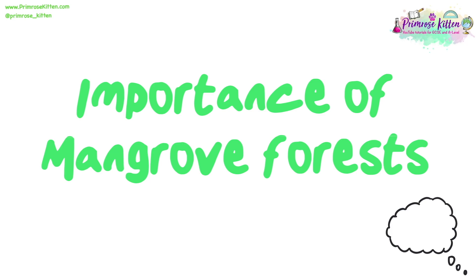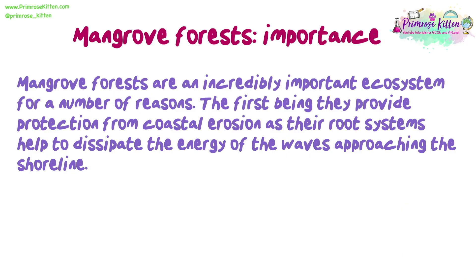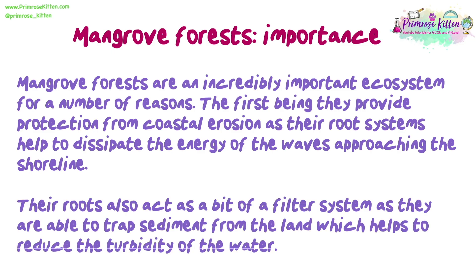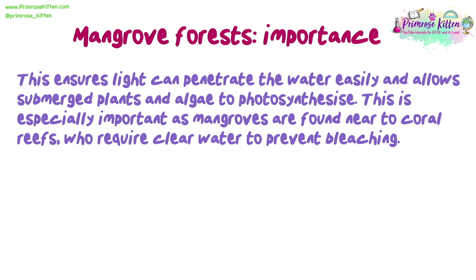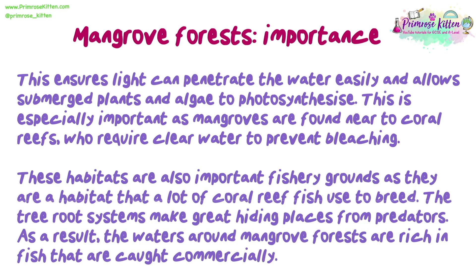Mangrove forests are an incredibly important ecosystem. They provide protection from coastal erosion as their root systems help to dissipate the energy of waves approaching the shoreline. Their roots also act as a filter system, trapping sediment from the land, which reduces the turbidity of the water. This ensures light can penetrate easily, allowing submerged plants and algae to photosynthesize — especially important as mangroves are found near coral reefs, which require clear water to prevent bleaching. These habitats are also important fishery grounds, as many coral reef fish use them to breed, and the root systems make great hiding places from predators, meaning the surrounding waters are rich in commercially caught fish.